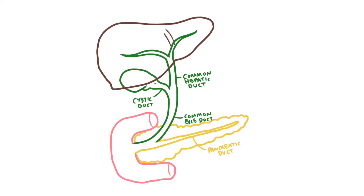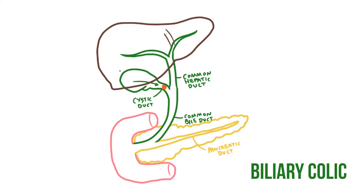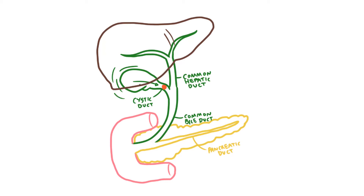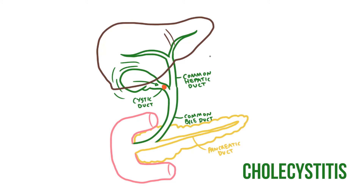Let's imagine a patient with an obstruction in the cystic duct. Initially the patient will suffer waves of pain after eating as the gallbladder attempts to squeeze bile past the blockage and into the gut. This is known as biliary colic. If bile can't leave the gallbladder, it can become inflamed and sore, leading to a condition known as cholecystitis.